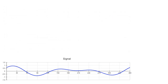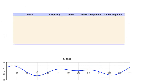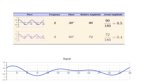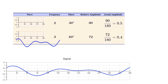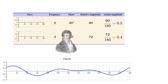So our signal is made up of two waves. The first has a frequency of 2 at a phase of 30 degrees and a relative amplitude of 90. The second has a frequency of 3 at a phase of 60 degrees and a relative amplitude of 72. When these two waves are added together, we get a result which looks like our signal. So using convolution, we have managed to deconstruct our signal into its constituent sine waves. We have just found our first Fourier series.